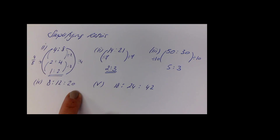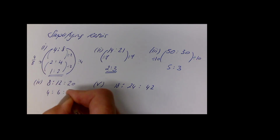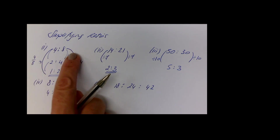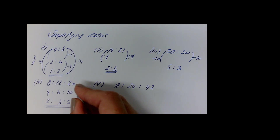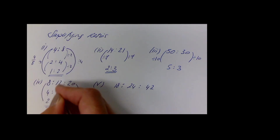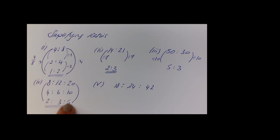Even with three-part ratios, the same principle applies — as long as you do the same thing to everything, you keep the proportions the same. For example, 8:12:20 — you could halve everything to get 4:6:10, and halve again to get 2:3:5. Or if you spotted it straight away, divide everything by 4 to go directly to 2:3:5. There's nothing that divides into 2, 3, and 5, so that's the final answer.